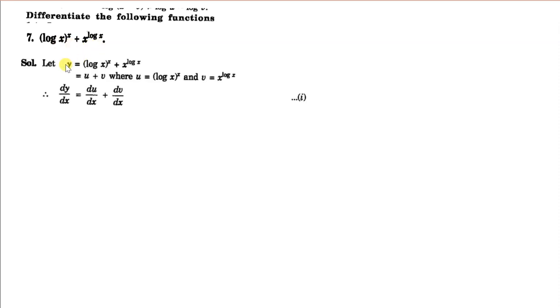This is the seventh question: differentiate the following functions — log x to the power x plus x raised to the power log x. This question has been asked in the board examination many times. Let us first represent it by y: y is equal to log x to the power x plus x to the power log x. Whenever you have a function having two or more terms, don't take log at this step, but first represent the first term by u and the second by v.